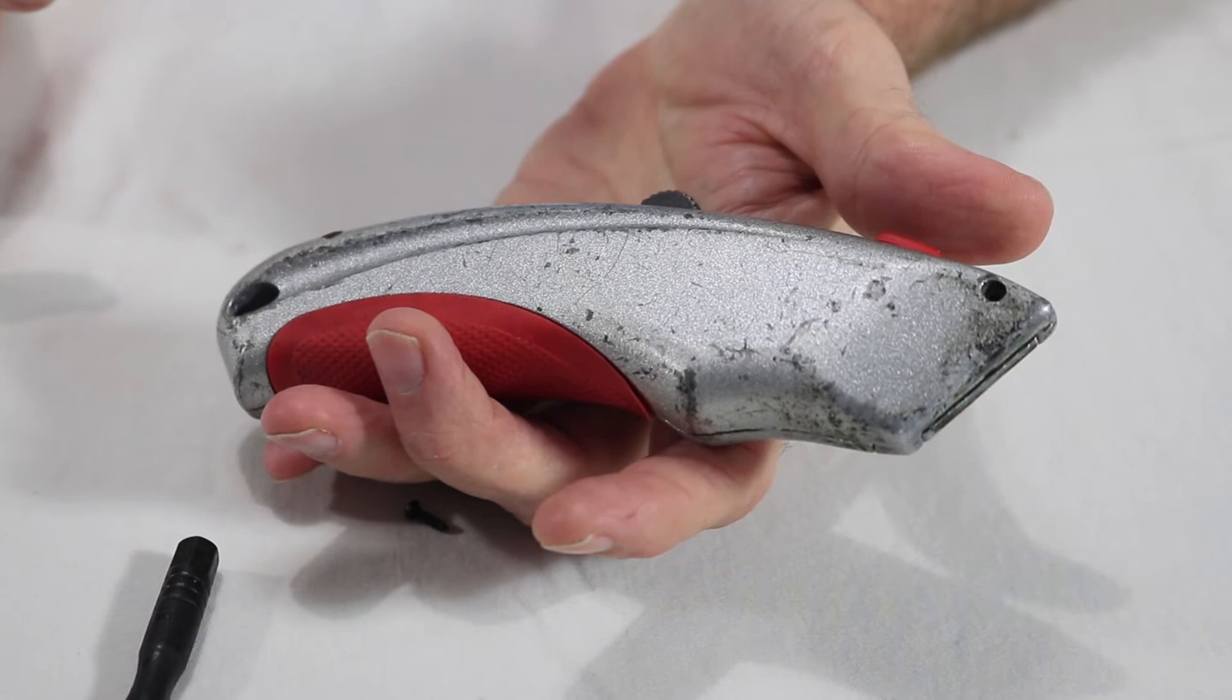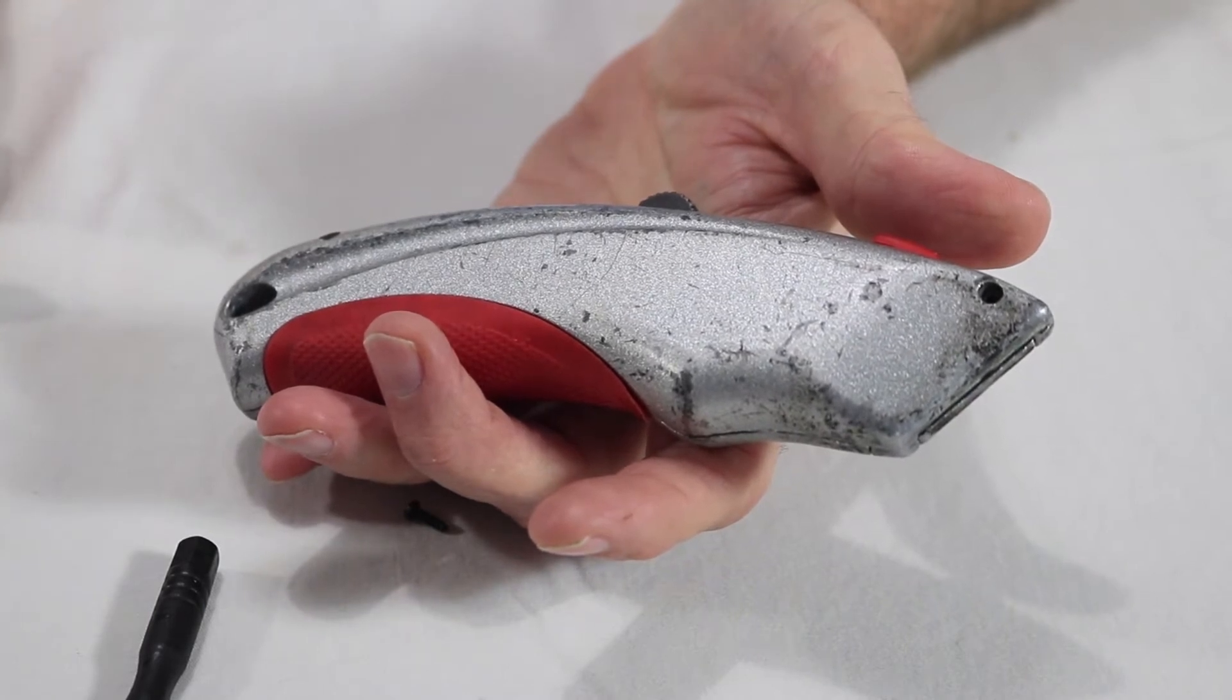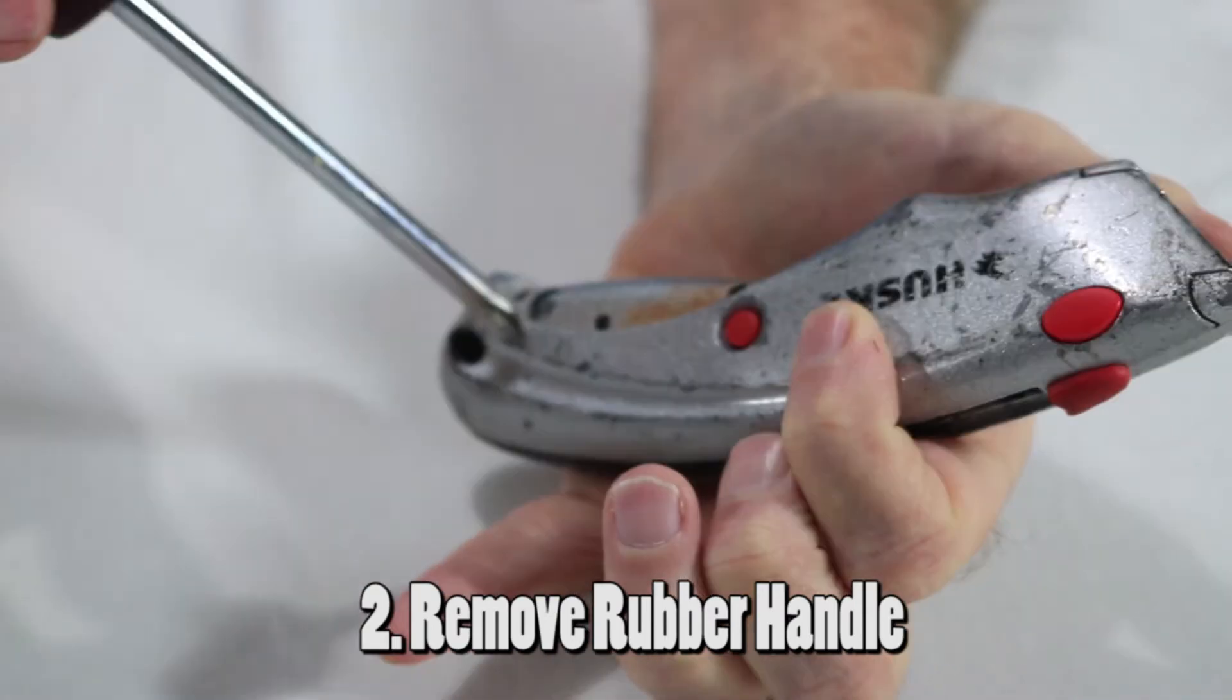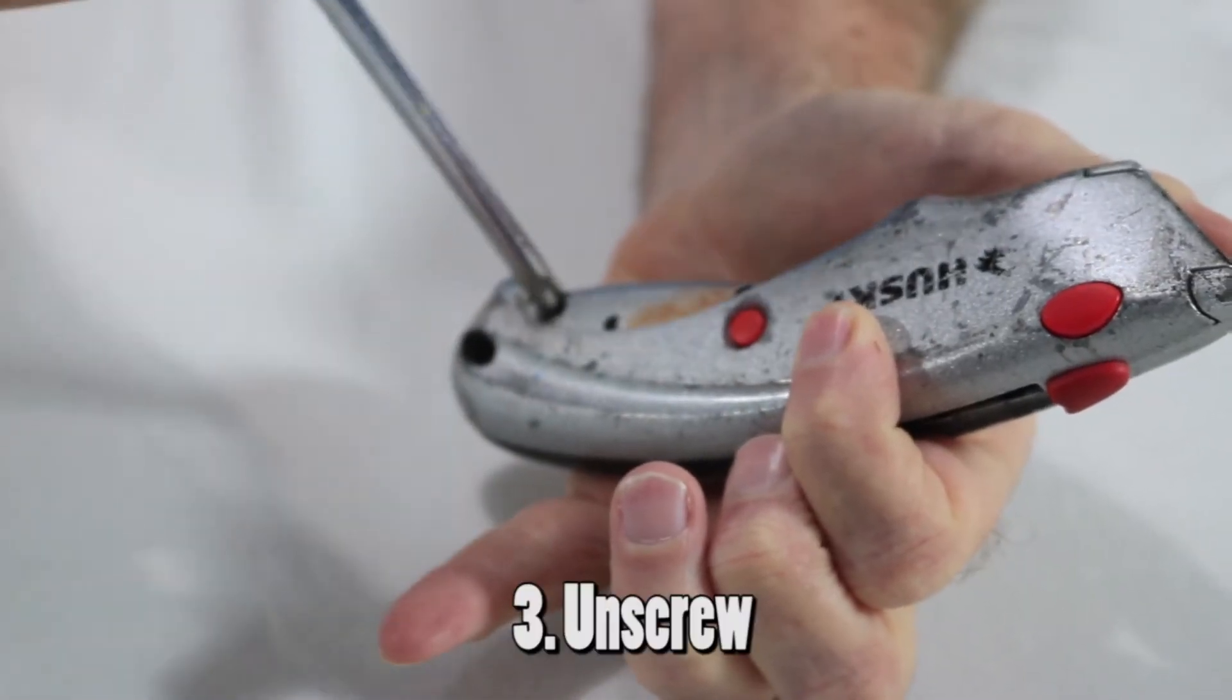Because I did this before I know there's a bigger screw to hold the handle together but it's hidden. It's underneath this red rubber handle. That's a clue you're not really encouraged to take the knife apart. The grip does come off. You have to pry it off and here's our hidden handle screw.